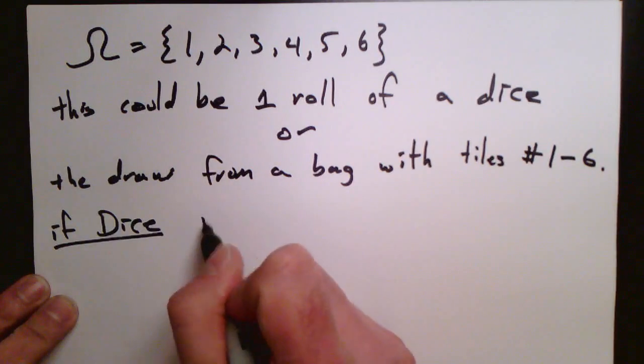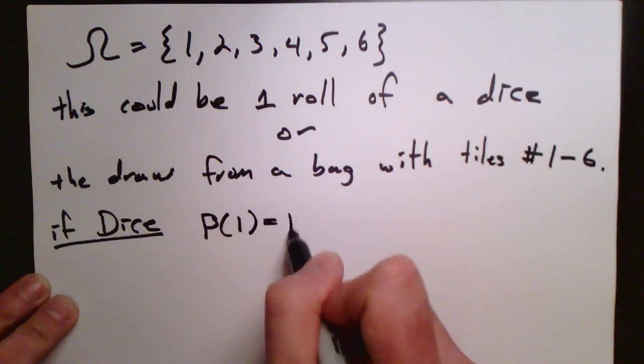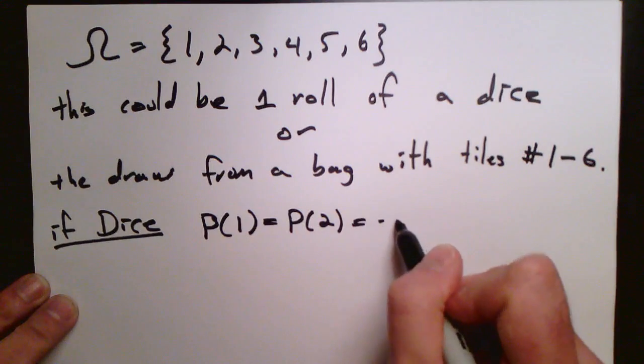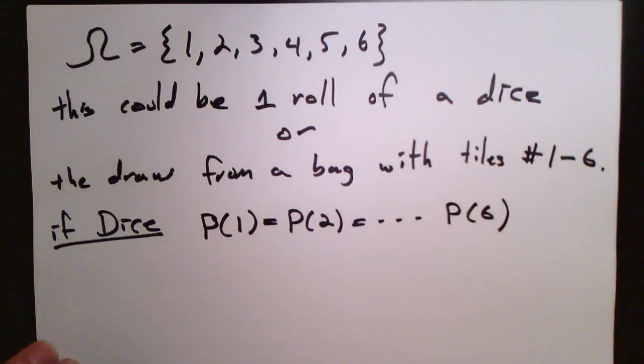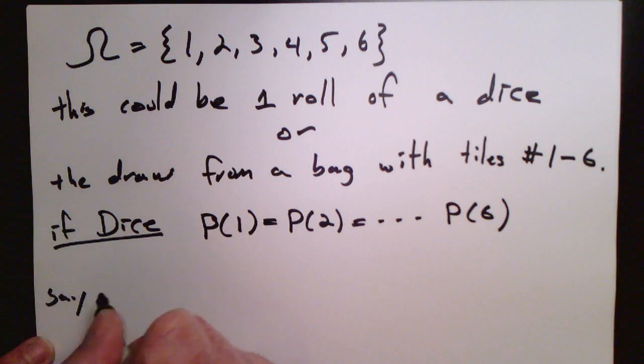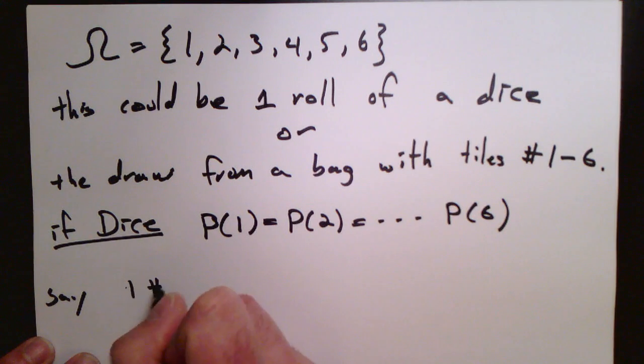Now, the thing that distinguishes them is the probability. So if it's dice, then the probability of 1, probability of 2, all the way to probability of 6, those are all equal to 1/6.